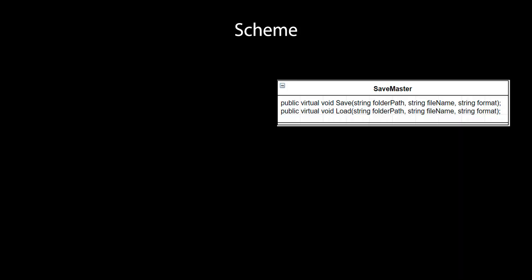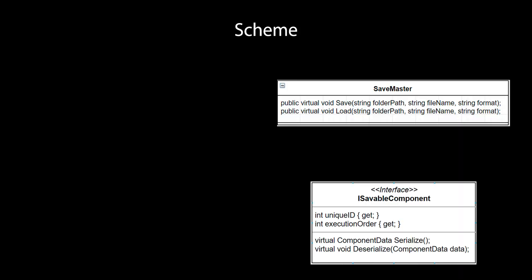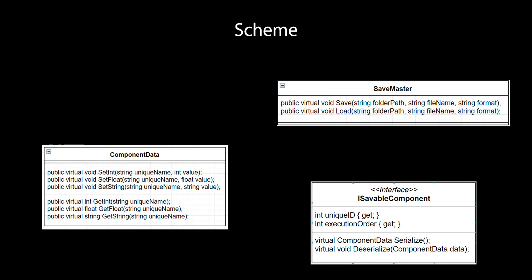The idea is pretty simple. We have three entities: save master, iSavable component, and component data. To save the game you need to call the save method in save master. Inside this method, it searches all components that implement the iSavable component interface. Then it calls the serialize method for all found components, and then the data is saved into a file.